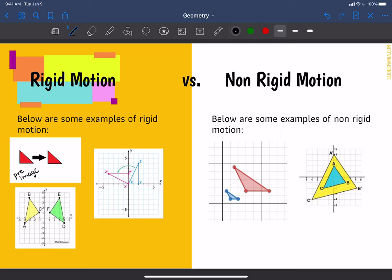And after you do the transformation, you call it the image. So we go from the pre-image to the image. Think of pre as in like before. So before you do any transformation, that's your pre-image. After you do the transformation, it's the image.